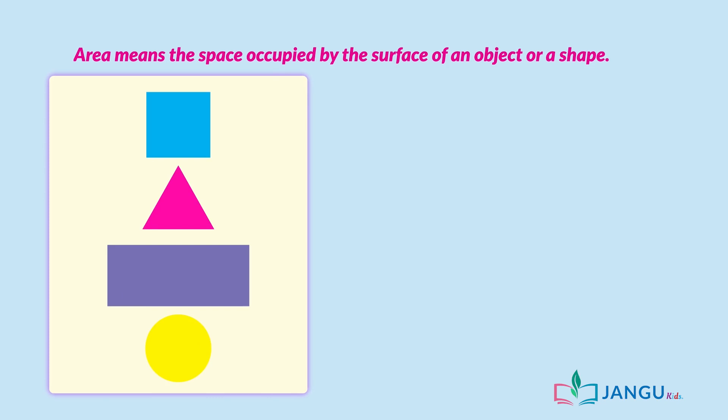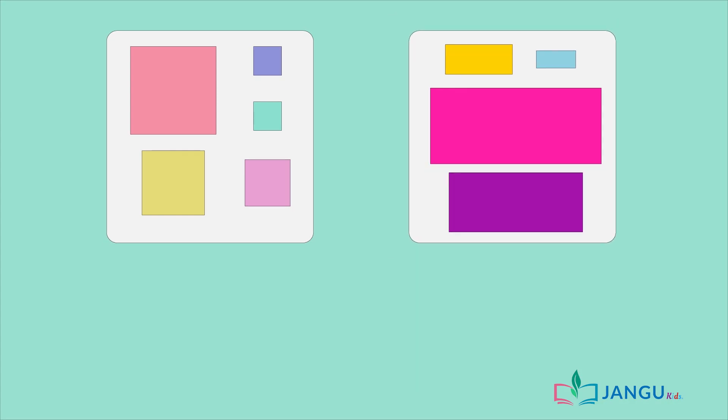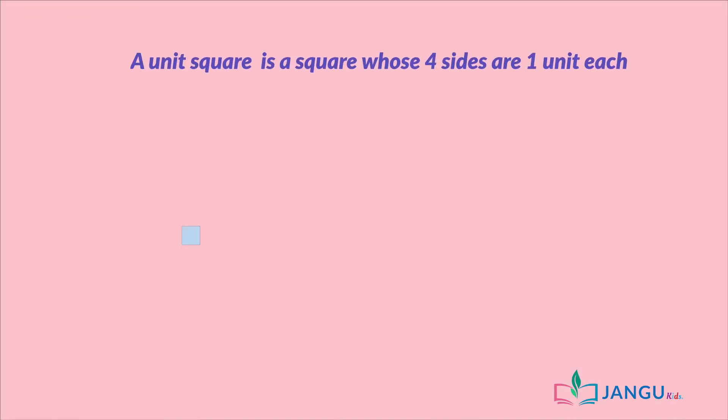So for the purpose of this lesson, we will be finding the area of squares and rectangles using two methods: square units method and the formula. A unit square is a square whose four sides are one unit each. We use square units to measure area.